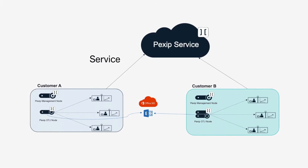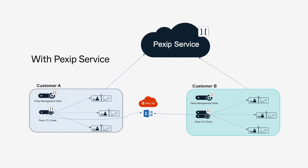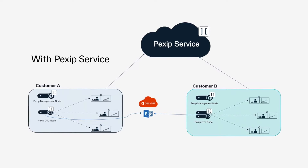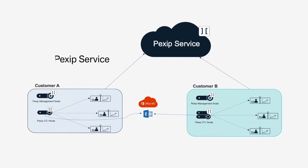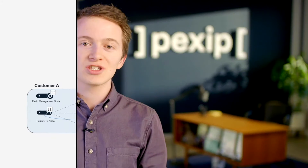Pexip service customers will need to deploy a management node and at least one conferencing node. This can be deployed on-premise or with a cloud provider of your choice. A self-hosted deployment allows the Pexip software to communicate with endpoints on the customer's local network and maintains data privacy. Meeting information remains in the customer's network.